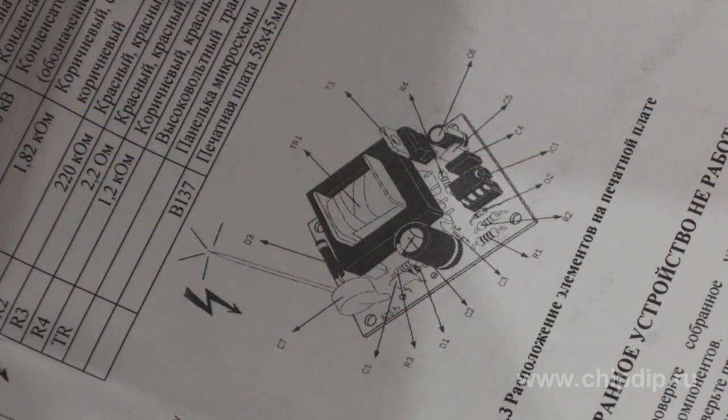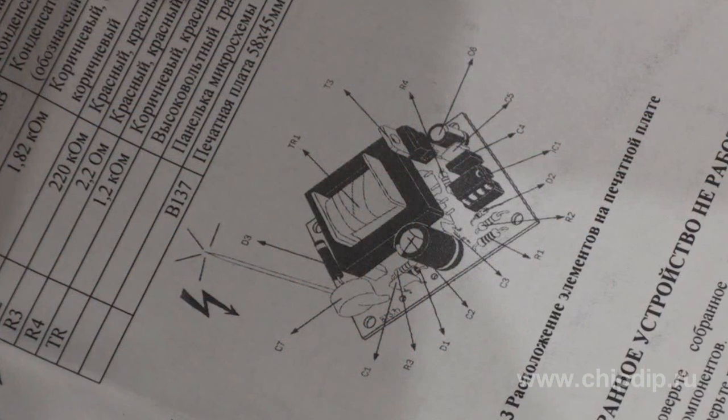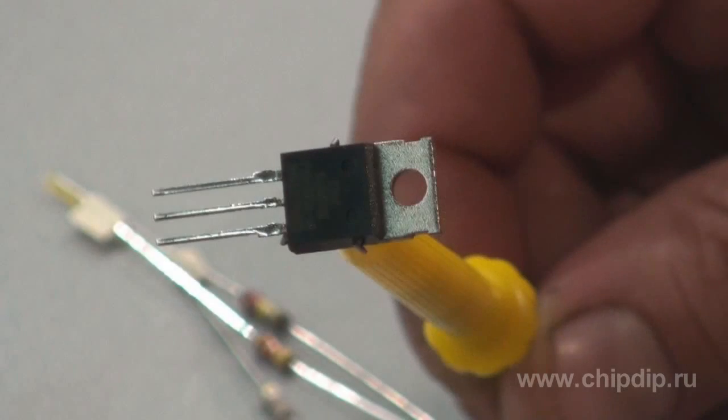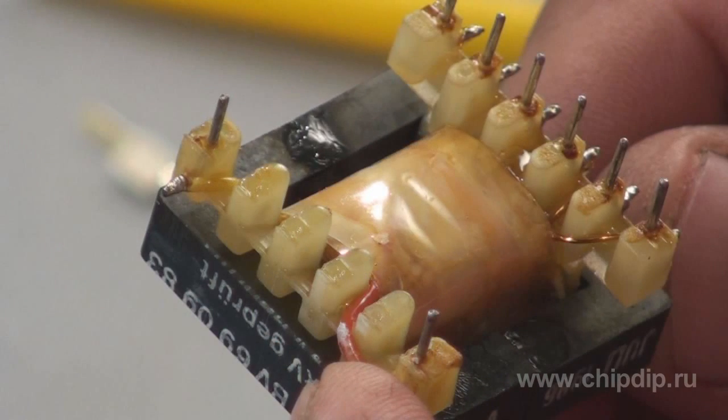It is supplied in the form of a construction set and represents a high-voltage converter which consists of a blocking oscillator made on a T transistor, on a TR high-voltage transformer, and a voltage multiplier.